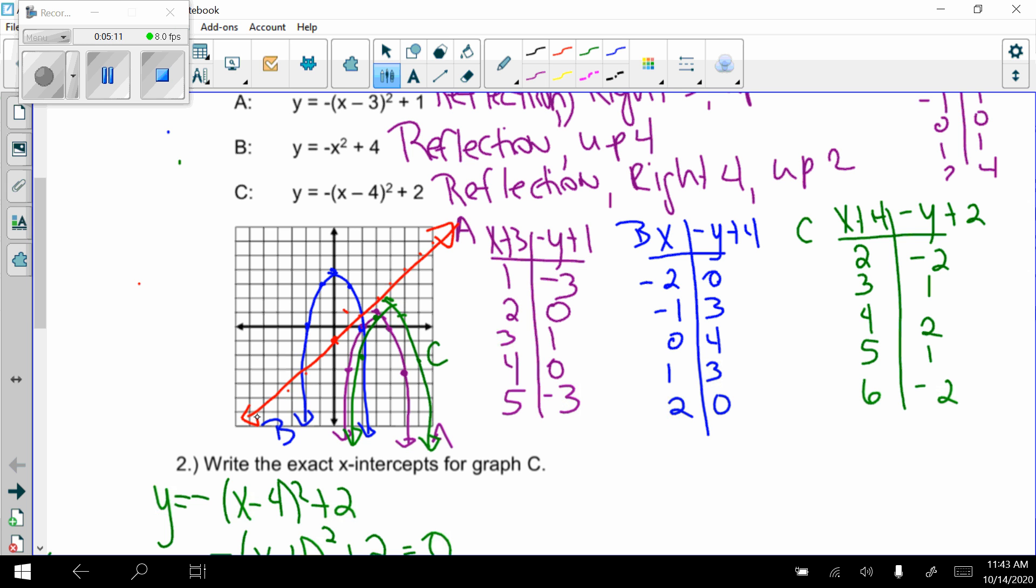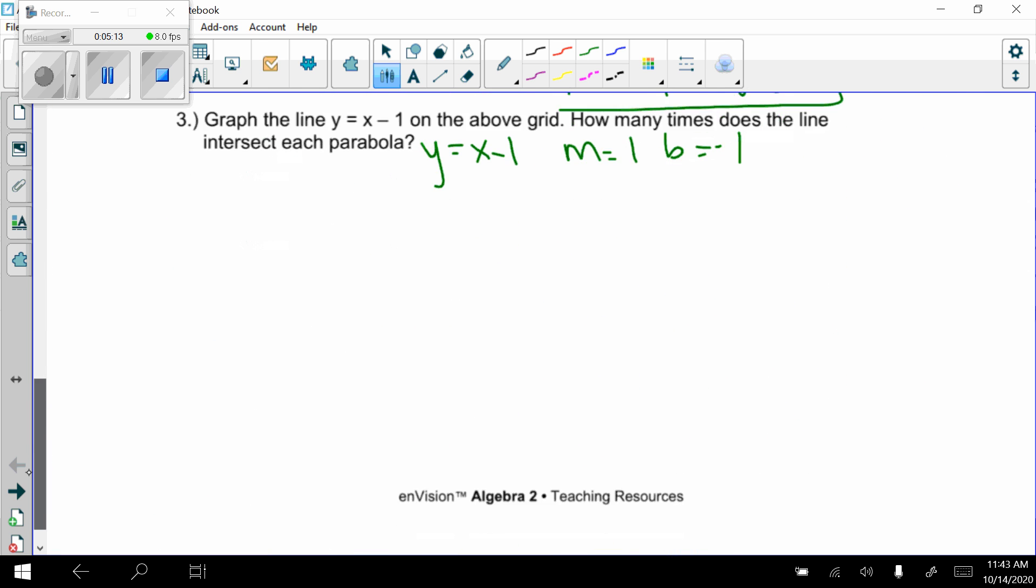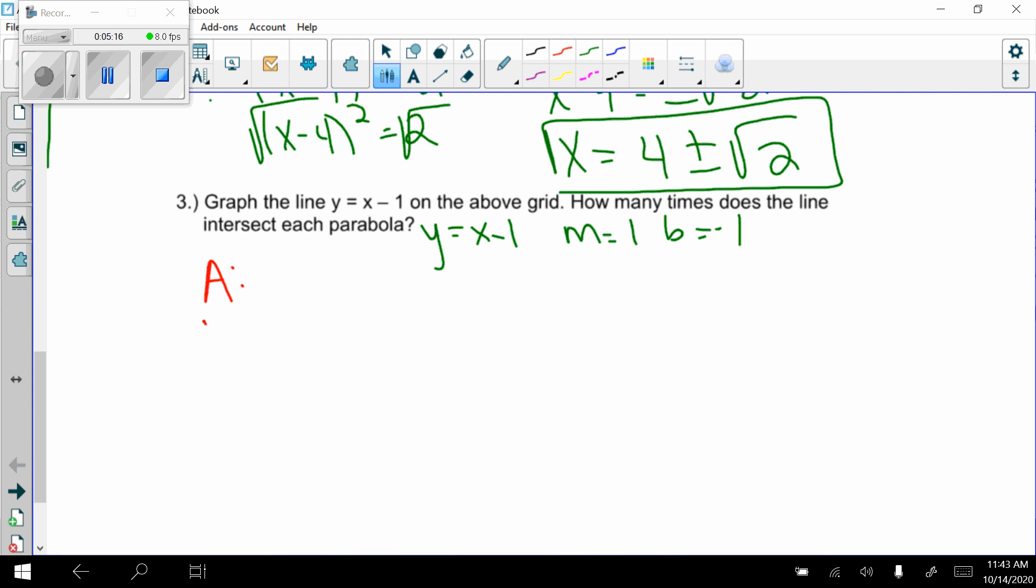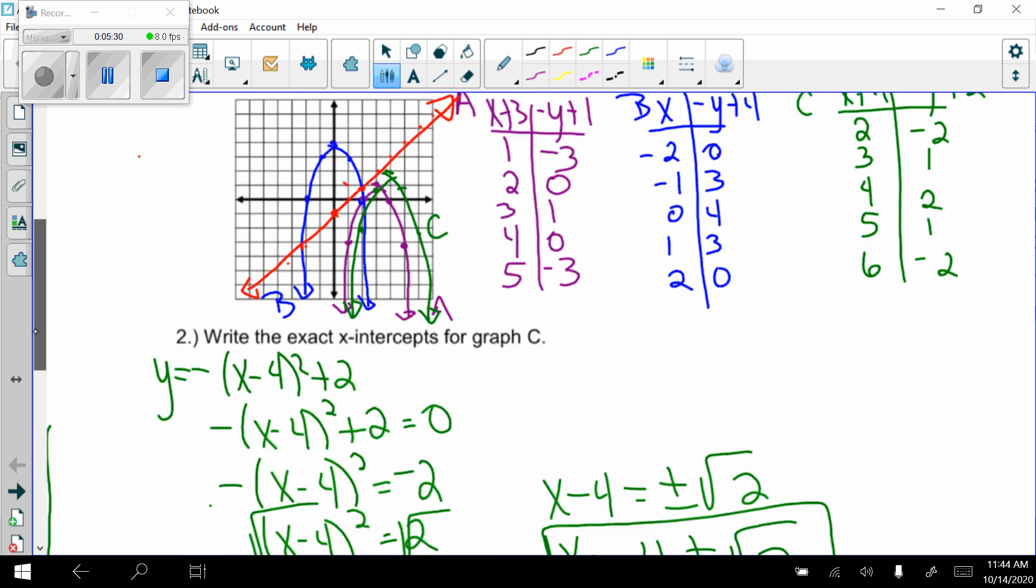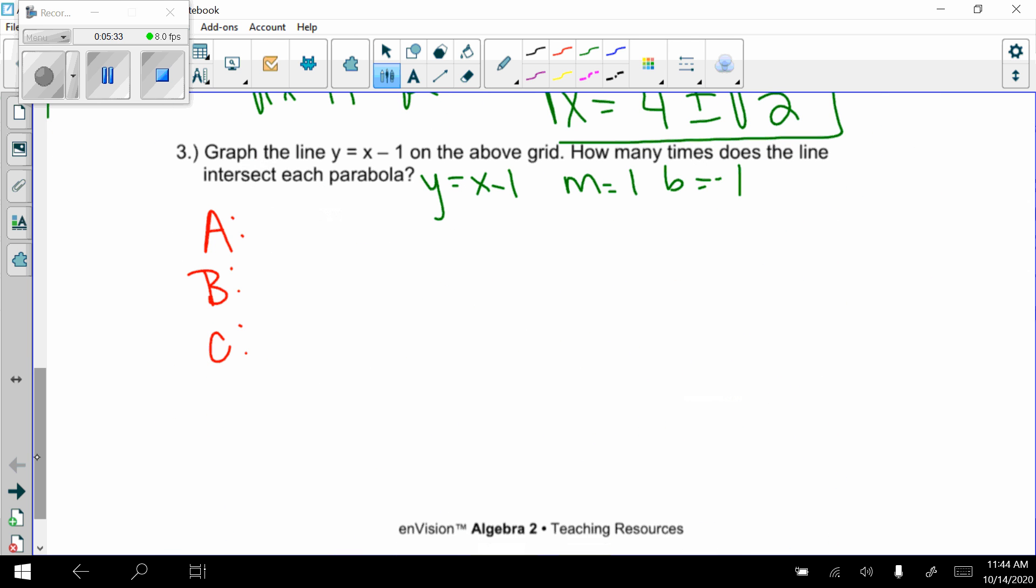And then it also asks how many times does the line intersect each parabola. So I'm going to list parabola A, parabola B, and parabola C. So parabola B was in blue. It's crossing twice. Parabola A was in the purple. It's never touching it. C was in green. It's never touching that. So A, how many times does the line intersect? None. Never. B, twice. And C was also none.